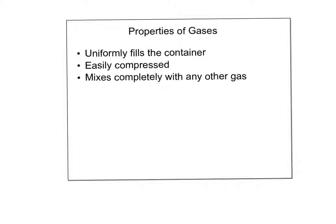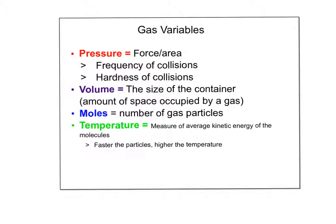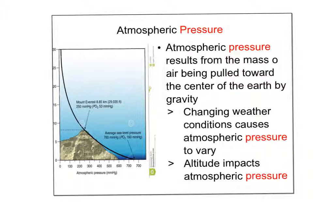Here are some of the variables we'll see in these calculations. Pressure is force divided by area — really, how frequently gas particles collide with each other and the container walls, and how hard those collisions are. Volume is the size of the container. Moles is the number of particles. Temperature is the average kinetic energy — the faster the gas moves, the higher the temperature.